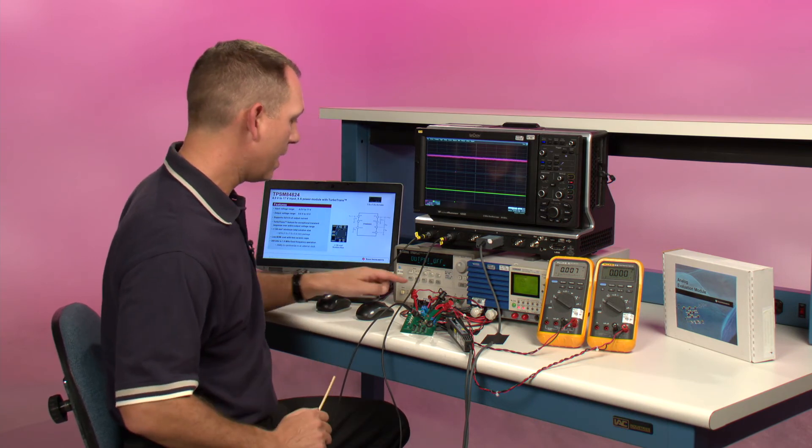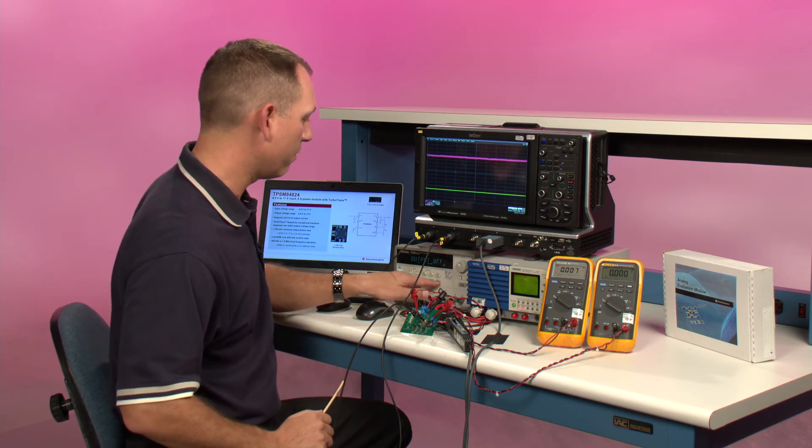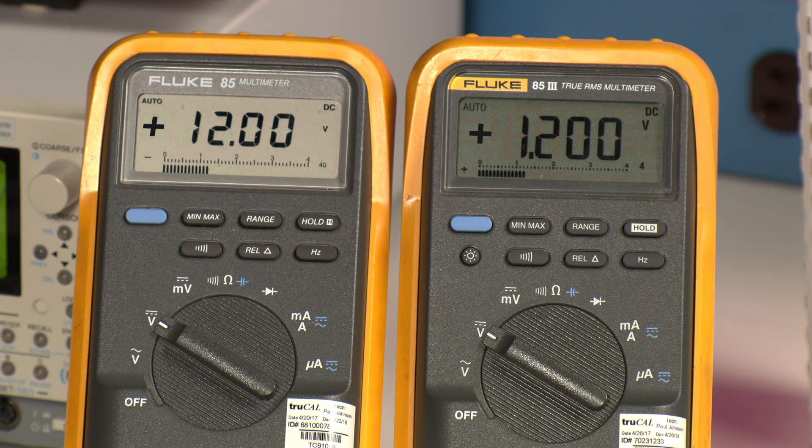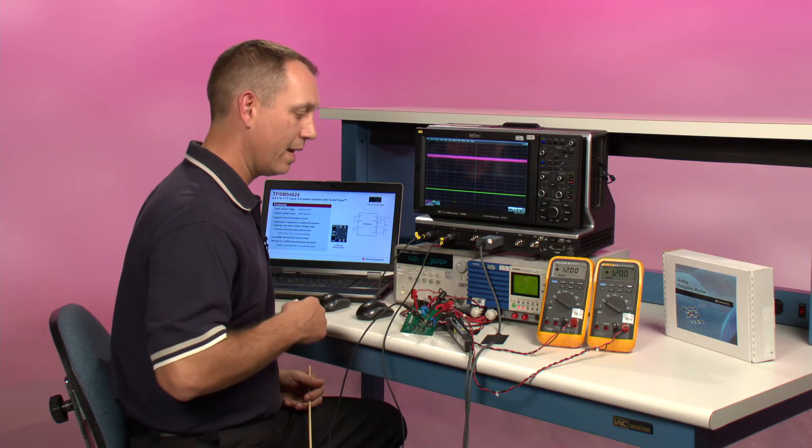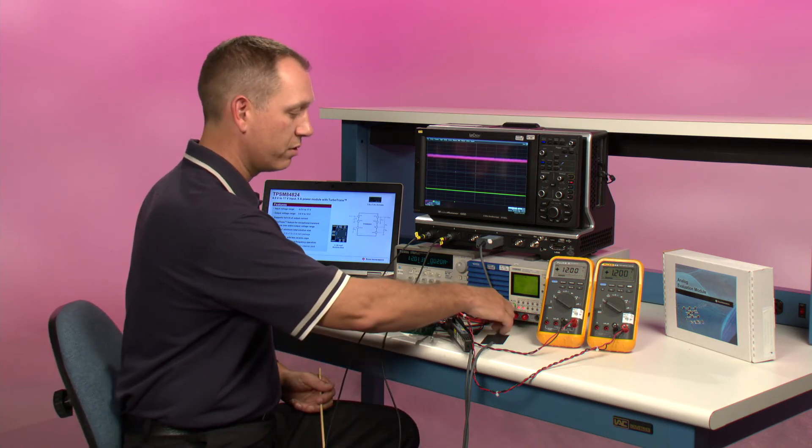So now that I have the board connected properly, I'm going to apply an input voltage of 12 volts. So now I've applied a 12 volt input voltage, now I have 1.2 volts on the output, and now I'm going to apply a transient load step of 2 amps to 4 amps.